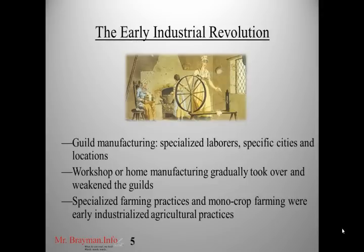During the medieval period, a lot of early manufacturing was done by guilds — a guild of bakers, a guild of weavers who wove cloth. These were specialized laborers who often lived and worked in specific cities, so that a city might become known for its cloth, wine, or candles. Over time, people started to set up manufacturing in their homes, where a family might specialize in weaving or candle making, and this kind of weakened the guilds in many European cities.